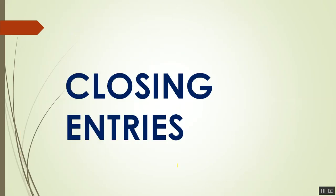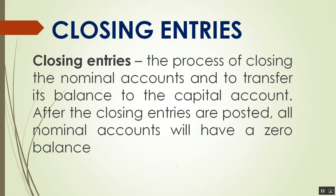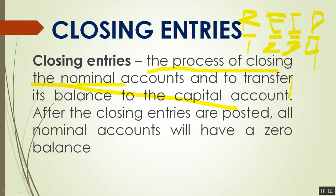Next is closing entries. Under closing entries, the important mnemonic is R-E-I-D — think of 'James Reed.' R stands for Revenue, E stands for Expenses, I stands for Income Summary, and D stands for Drawings or Dividends. This is the order: first we close Revenue, then Expenses — both transferred to Income Summary. Third, we close Income Summary, and fourth, we close Drawings — all transferred to the capital account.